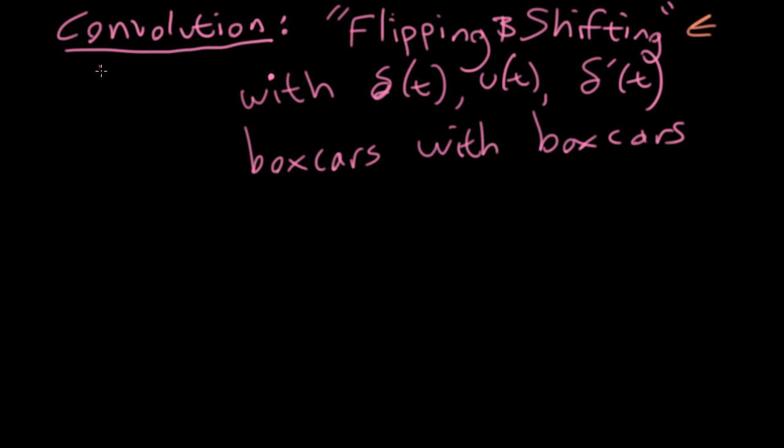In lecture 10, we introduced the idea of convolution, and we went through a lot of complicated exposition to describe an approach to the bookkeeping of convolution operations called flipping and shifting.